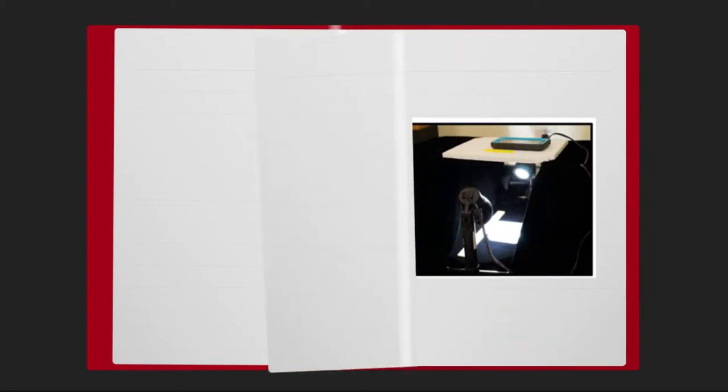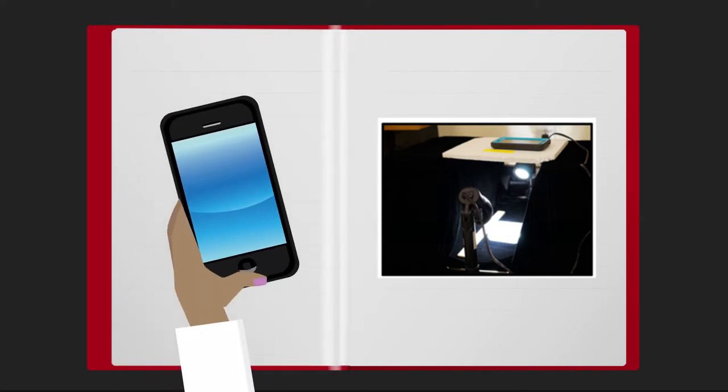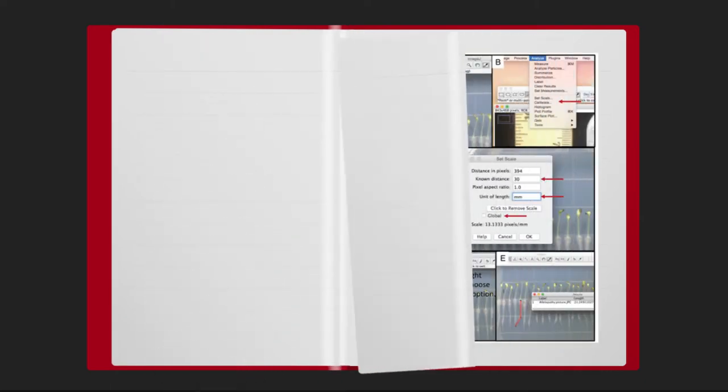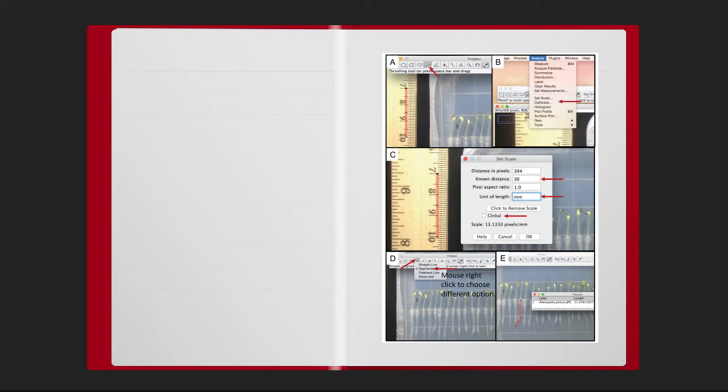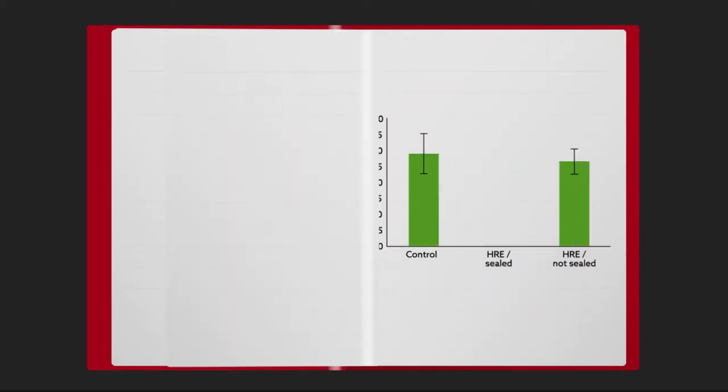Students track germination and root growth by taking photographs with their smartphones and measure root length in the photos using open-axis image analysis software. Inferential statistics can be used to compare measurements. The lettuce seeds exposed to the extract in the sealed environment will show lower germination rates and slower root growth compared to the other conditions due to the inhibitory nature of the bioactive allelochemicals present in the extract.